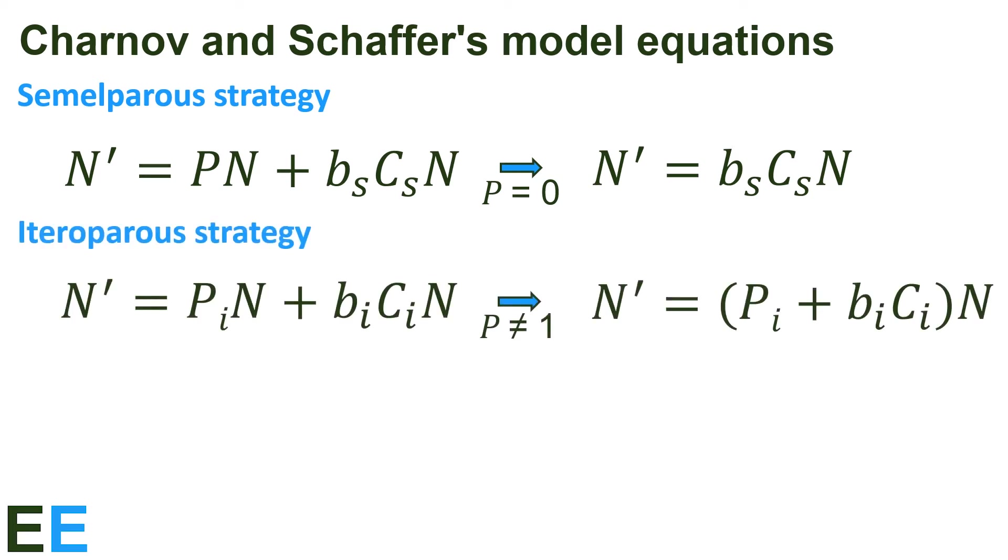For the iteroparous strategy, we add in both an adult and juvenile survival term. Capital P sub I for the adult survival and capital C sub I for the juvenile survival. Now that the adult survival rate is not 1, it stays in the final equation we get. N prime equals, in parentheses, P sub I plus B sub I times C sub I, all multiplied by N.